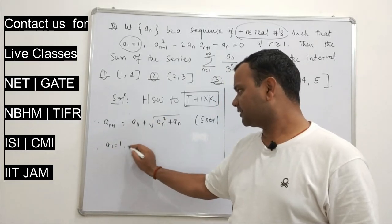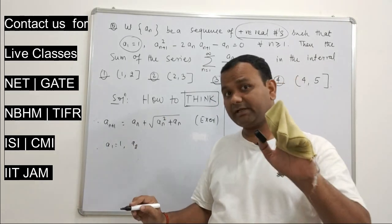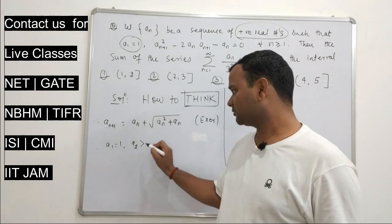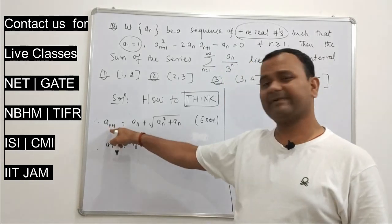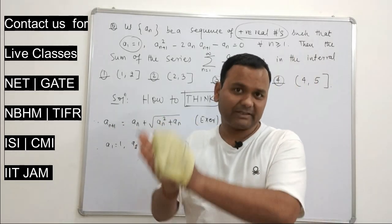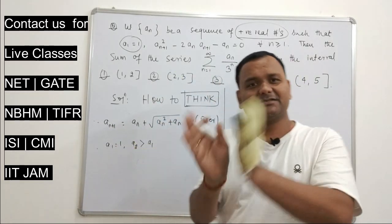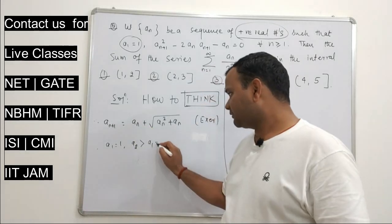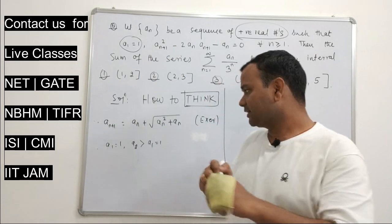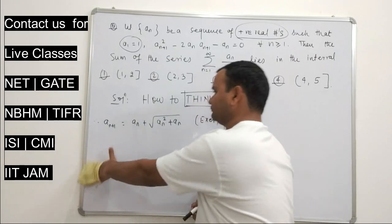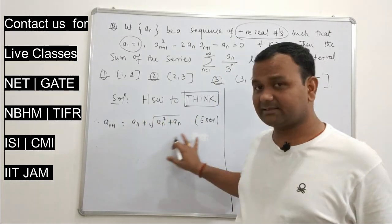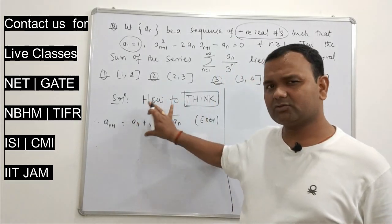First observe: a₁ = 1, and whatever a₂ is, a₂ = a₁ + √(a₁² + a₁) which is clearly bigger than a₁. When n = 1, that quantity a₁ + √(a₁² + a₁) is greater than a₁, so the sequence is increasing. Since it keeps increasing and each term is bigger than 1, aₙ goes to infinity. That's the first clear observation.